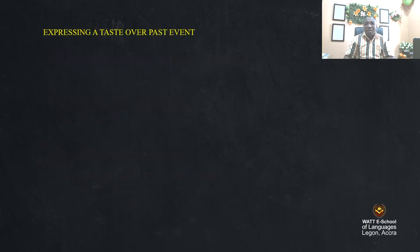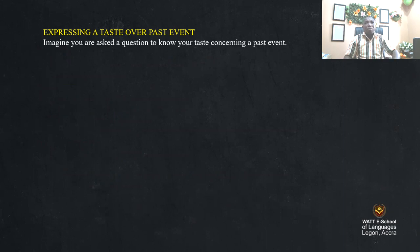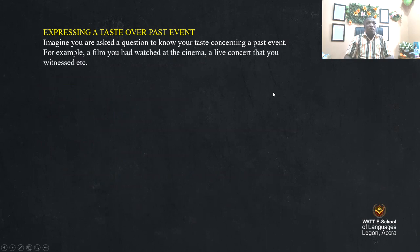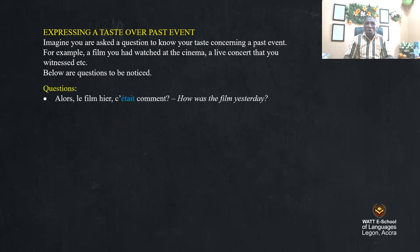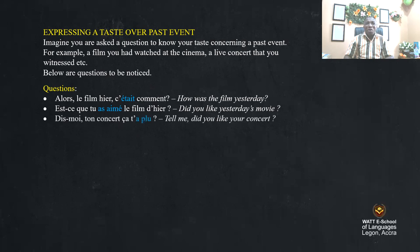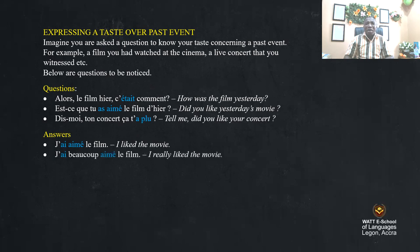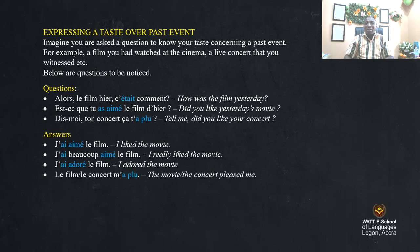Expressing a taste over past events. Imagine you are asked about your taste concerning a past event — a film you watched at the cinema, or a live concert. Questions: 'Alors le film hier, c'était comment?' — How was the film yesterday? 'Est-ce que tu aimais le film hier?' — Did you like yesterday's movie? Answers: 'J'ai aimé le film' — I liked the movie. 'J'ai beaucoup aimé le film' — I really liked the movie. 'J'ai adoré le film' — I adored the movie. 'Le concert m'a plu' — the concert pleased me. 'Le film m'a beaucoup plu' — the movie pleased me a lot.